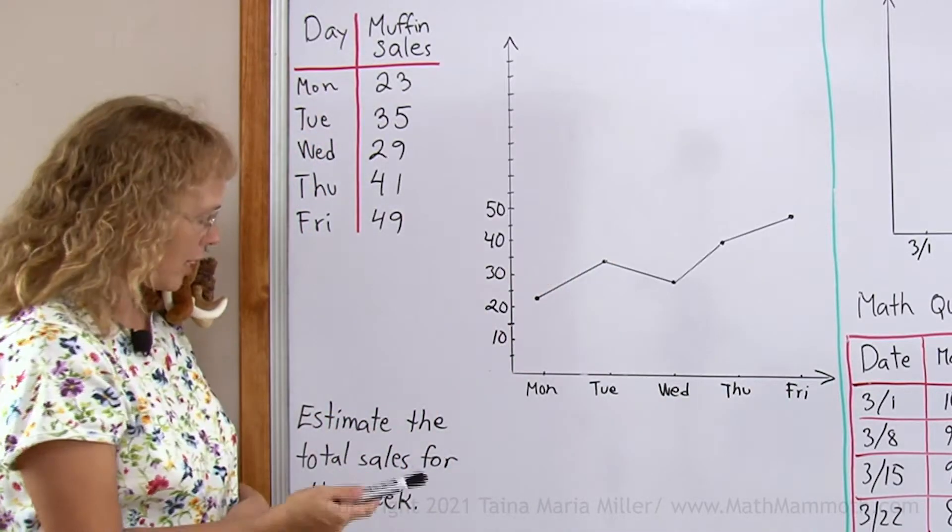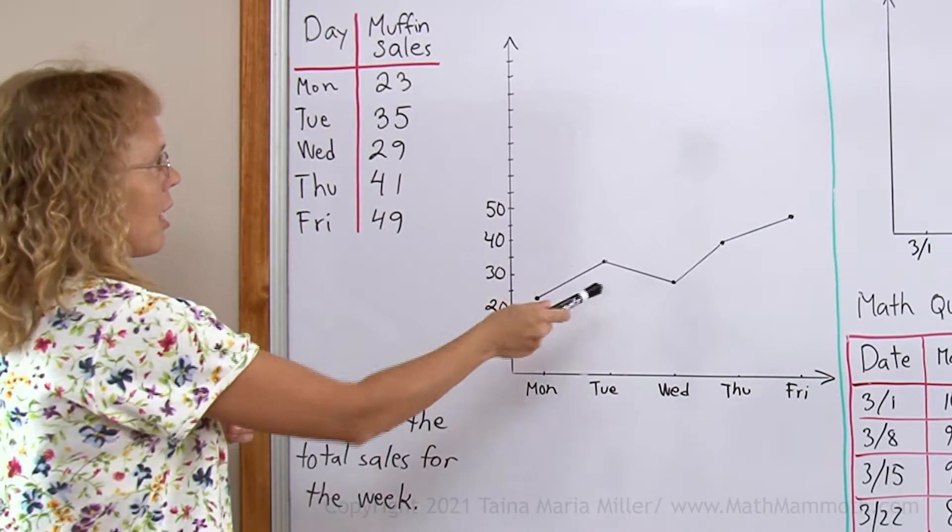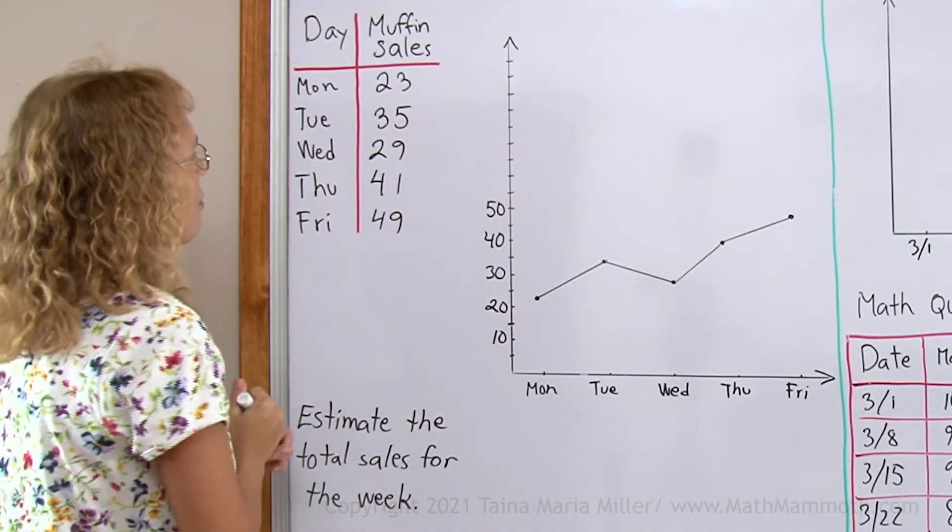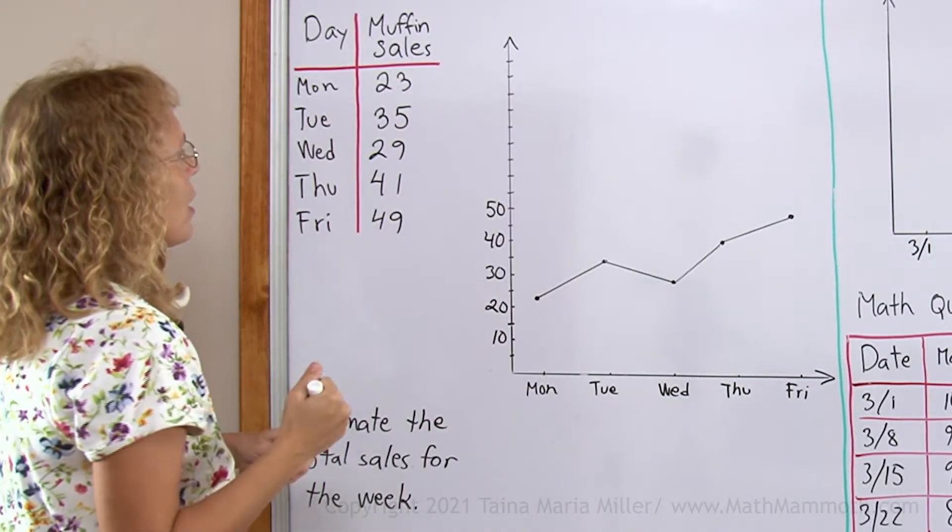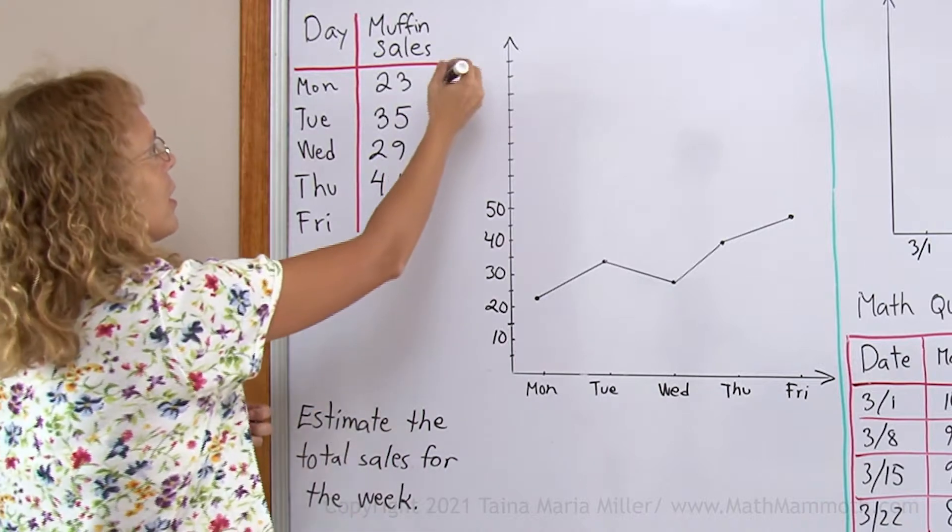Lastly, estimate the total sales for the week. For that, I could use the graph. But since I have the numbers, I would much rather use the numbers themselves. And to estimate, I can round my numbers. To the nearest 10, I think, here.